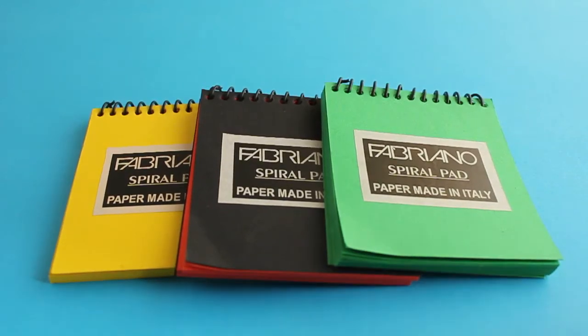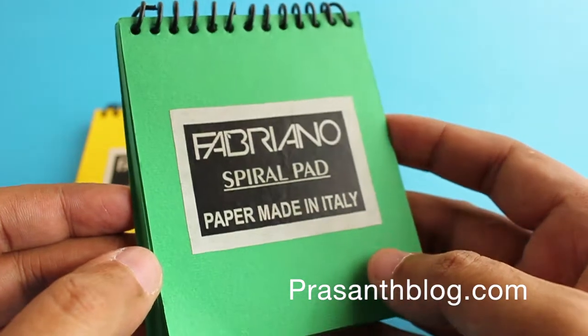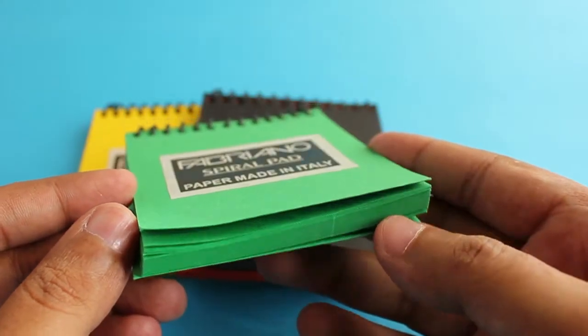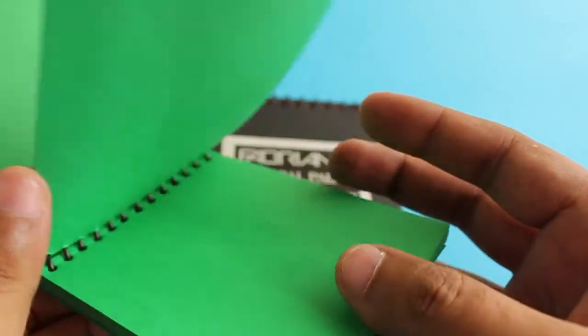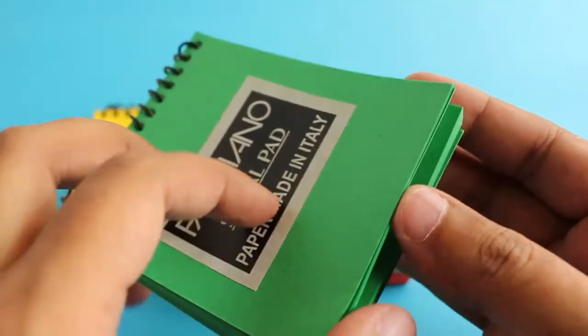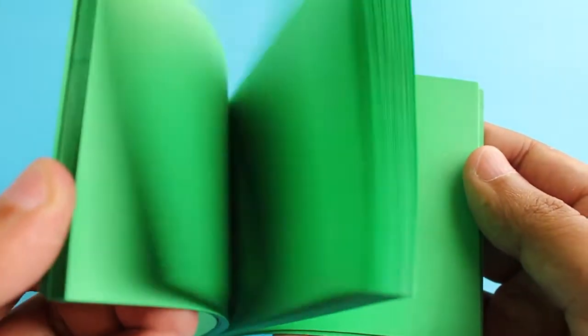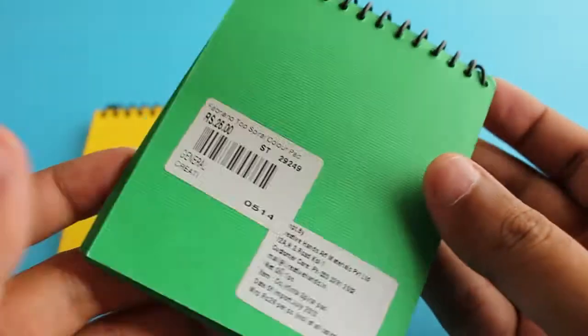Hello guys, let's take a look at these Fabriano spiral notepads. They are made in Italy and they come in these unique colors. Each one costs around 25 rupees or around 30 cents or so. I really like the color on them.